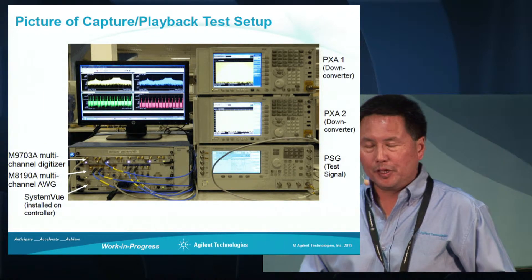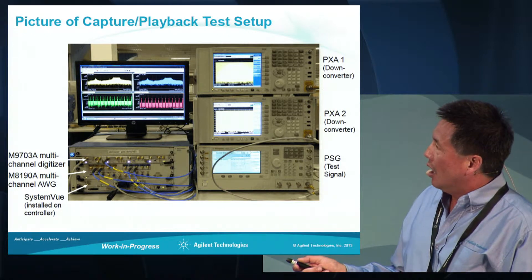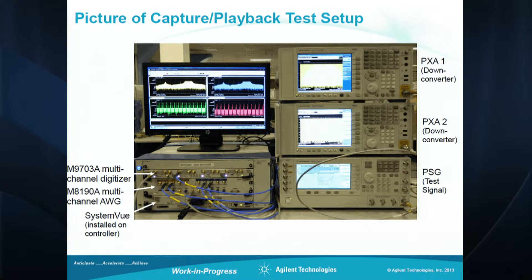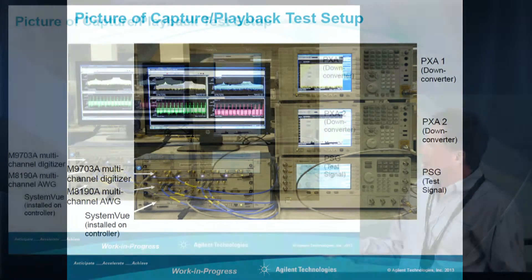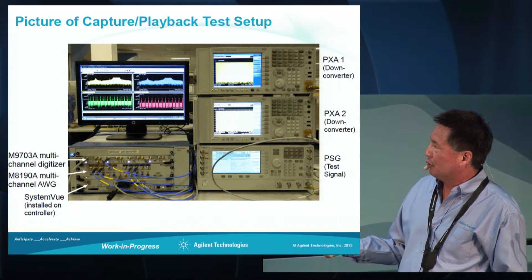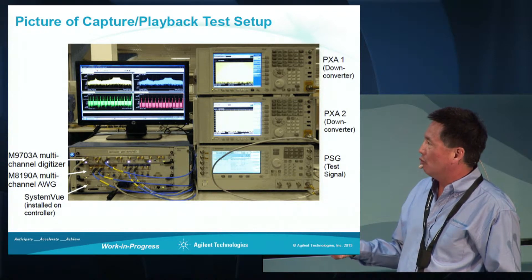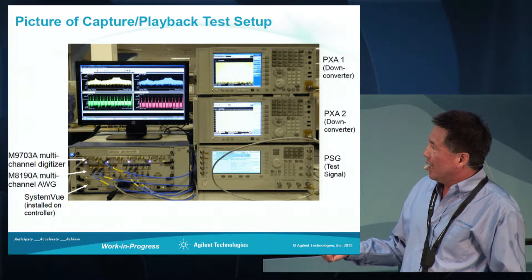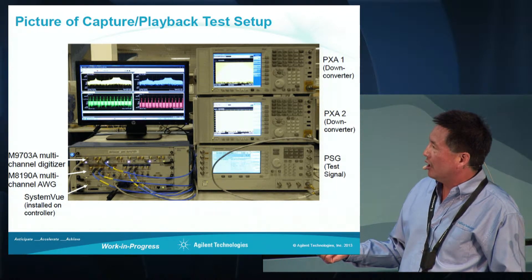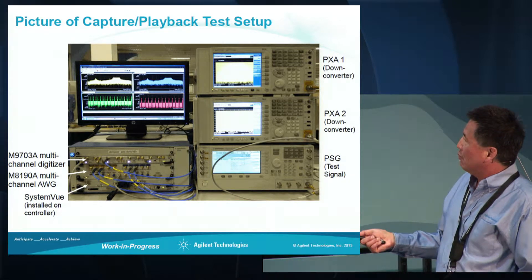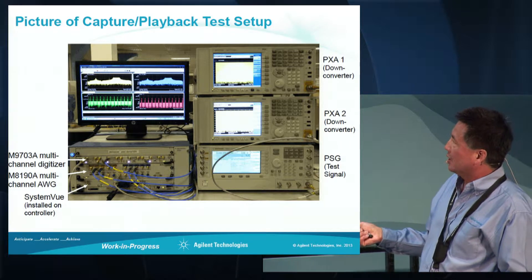This shows the test setup we'll be using. We have an AXIe chassis that has a controller, and we've got our system simulation tool SystemVue installed on the controller. We also have an M9703 digitizer, and we'll show how to capture signals with that digitizer to add in with these simulated emitters. We're then going to play this back out using our 8190 AWG. On the right hand side we have a PSG which we're using to create the test signal.